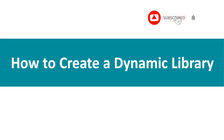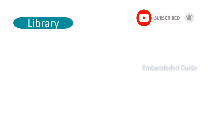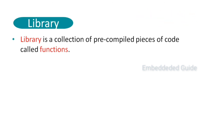Let me explain how to create a dynamic library. We already discussed static library creation in the previous video. A library is a collection of pre-compiled pieces of code — it contains functions and packages.